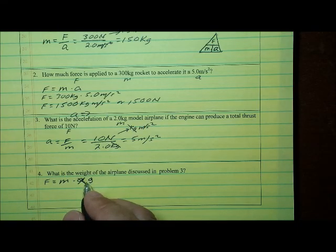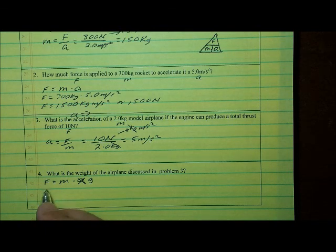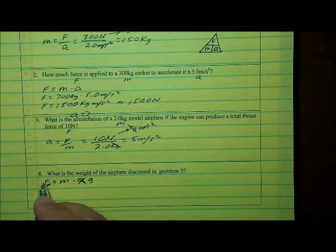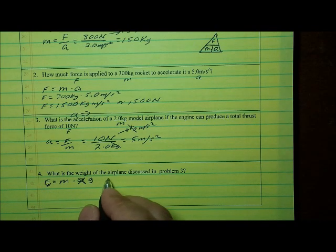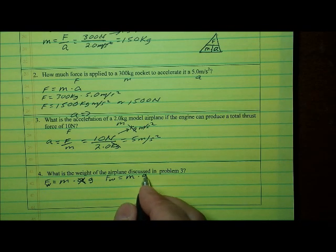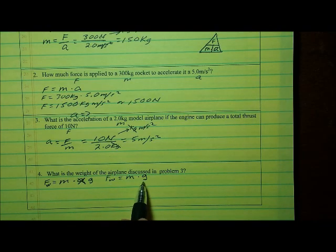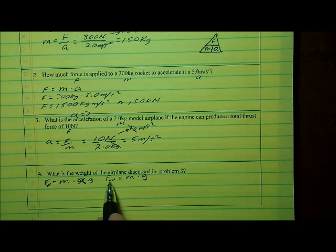All objects near the surface of the Earth are pulled downward by the force of gravity, causing those objects to accelerate downward at 9.8 meters per second squared. That's what gives an object its weight. So we're going to call this the force of weight. Our equation becomes: force of weight equals mass times the acceleration due to gravity, G. It's the same equation we used before — we're just specifically using the acceleration due to gravity because we're talking about weight.